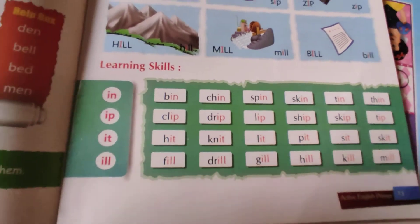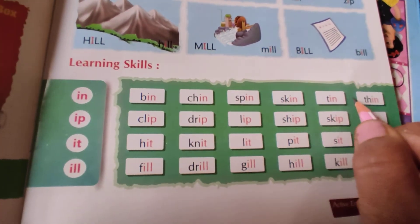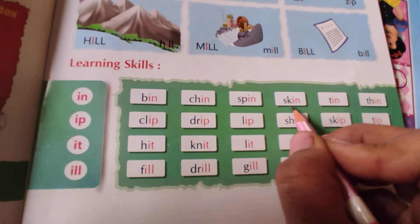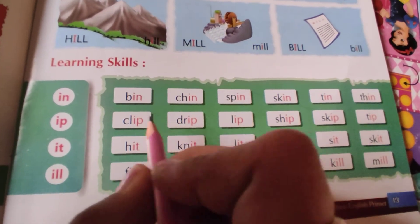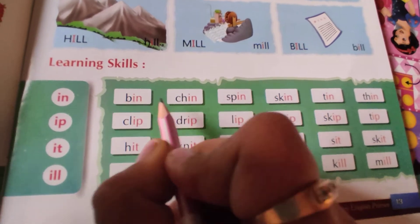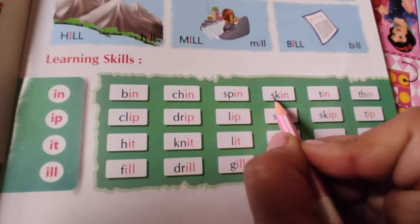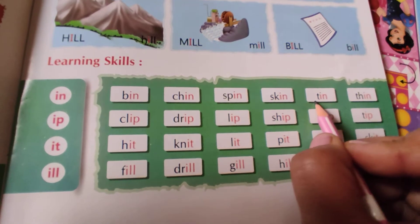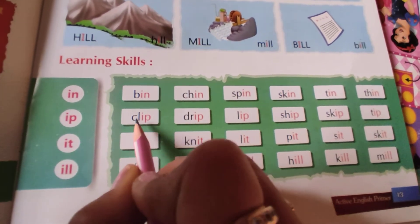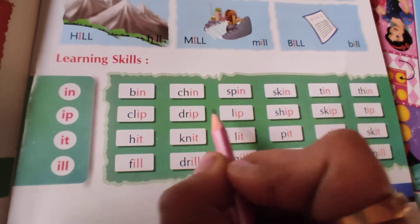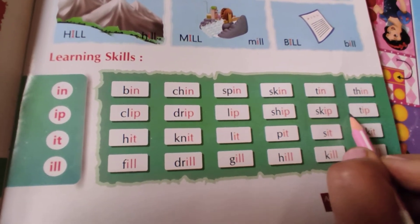Now, learning skill देख लेते हैं, students. जहाँ पर I-N दिया है — last वाले जो letters होंगे वो I-N वाले होंगे, जैसे: bin, chin, spin, skin, tin, thin. Thereafter, I-P: clip, drip, lip, ship, skip, tip.